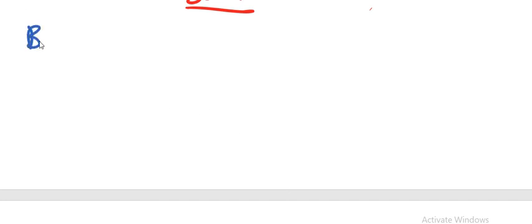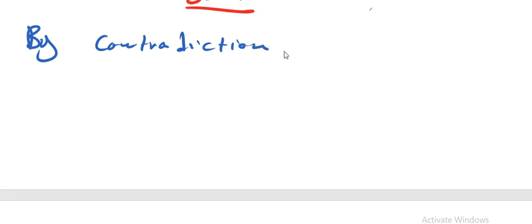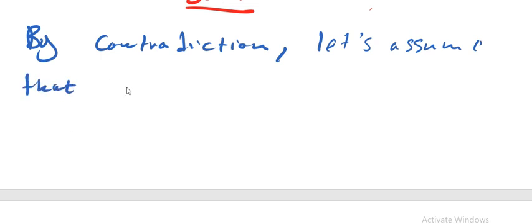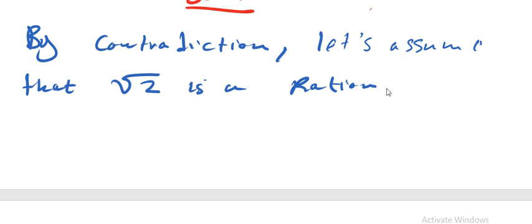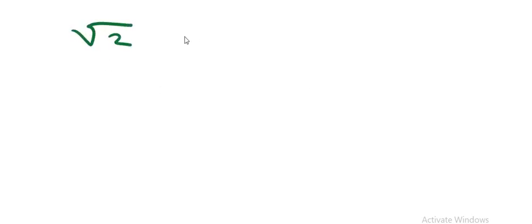So we are going to say: by contradiction. Let's assume that square root of 2 is a rational number. We know that rational numbers can be expressed in the form a over b, so then we can say square root of 2 is equal to p over q.